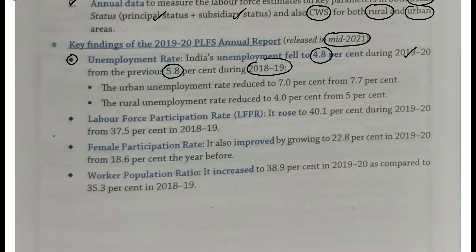Agar is unemployment rate jo gir gaya, toh shahron mein kitna, gaon mein kitna? Shahron mein jo berozgaari ke aankde gire hain — 7.7% hua karta tha, woh 7% pe aa gaya. Aur gaon mein 5% hua karta tha, woh 4% pe aa gaya.